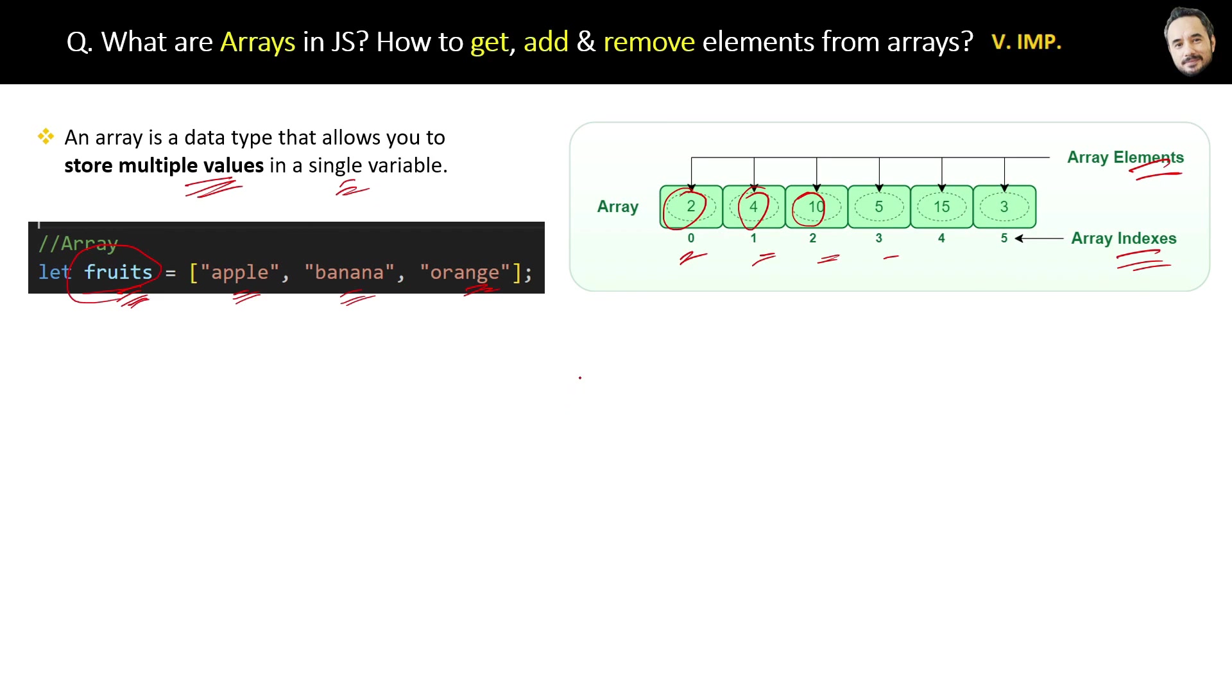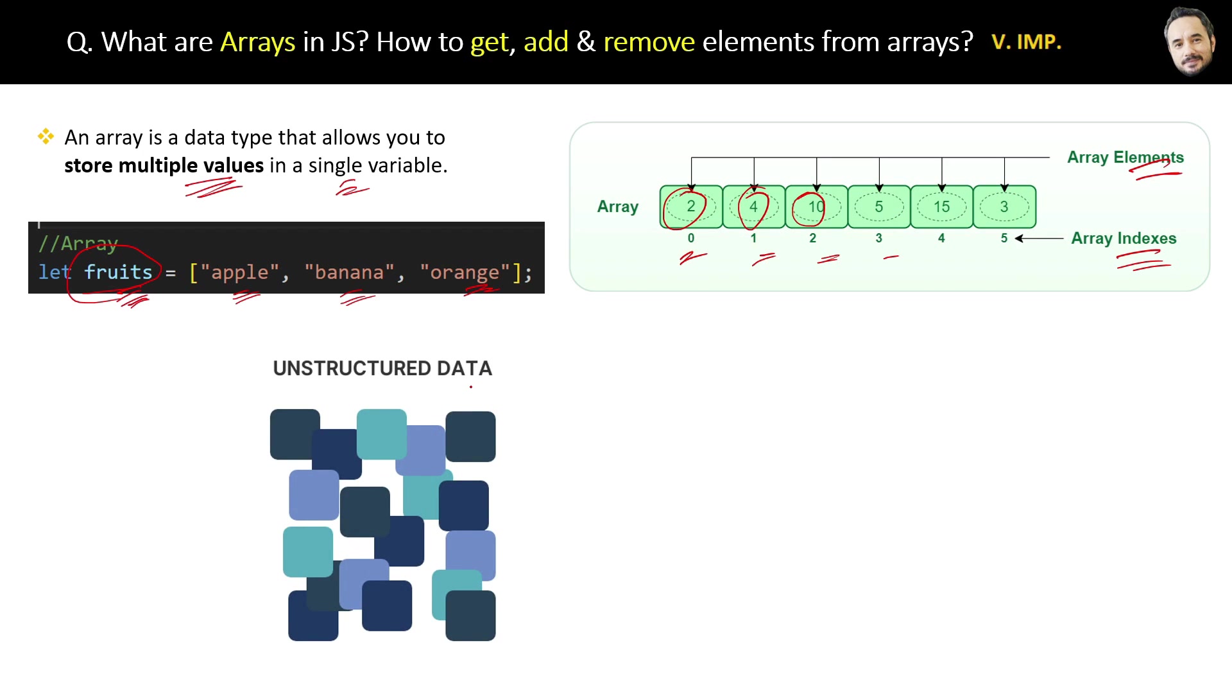We have a lot of data, and without arrays that data will look something like this: unstructured. Unstructured data where different data is stored in different variables, and it is very difficult to maintain this.